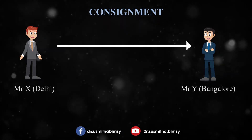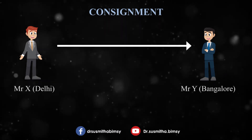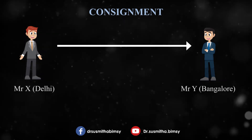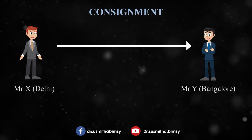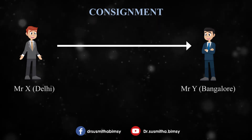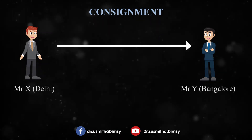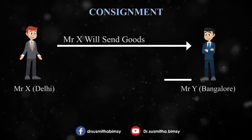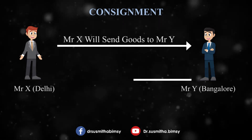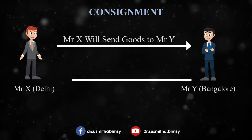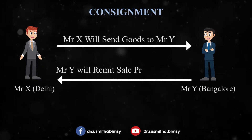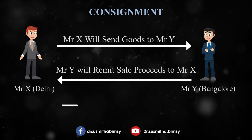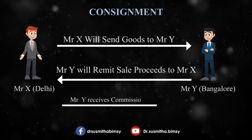Mr. X wants to increase his sales and achieve market penetration, but he has no contacts in Bangalore and doesn't have any branches there. So what happens is Mr. X will appoint Mr. Y as an agent. Mr. X will send goods to Mr. Y, and then Mr. Y will sell those goods on behalf of Mr. X. For selling those goods, Mr. Y will get commission from Mr. X.